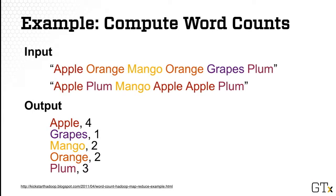Let's first look at what the input is, and what we will get in the end as output. As input, we have a collection of text files. For simplicity, we use only two, and each file contains only one line of fruit names. Just eyeballing those words, you can already tell the answer: Apple 4, Grapes 1, Mango 2, and so on. So again, given a collection of text files, we want to know every word's frequency.